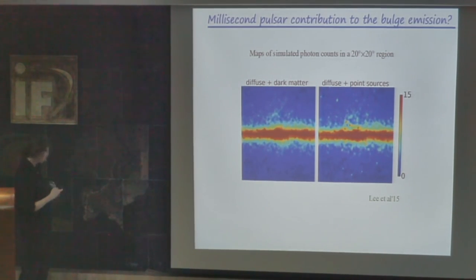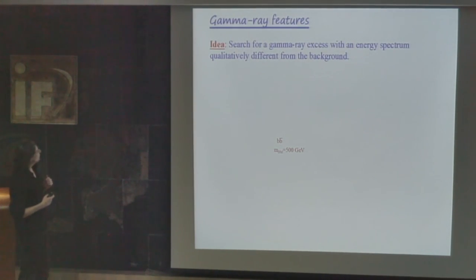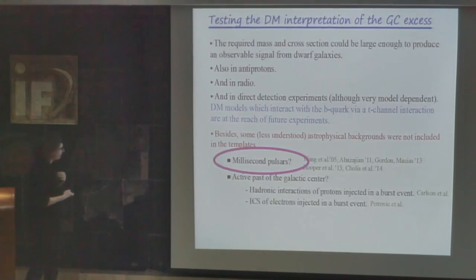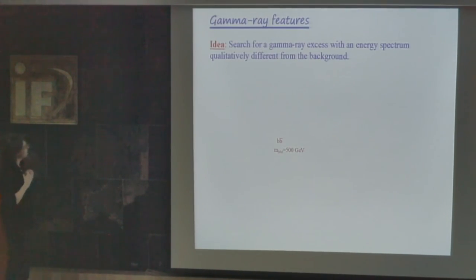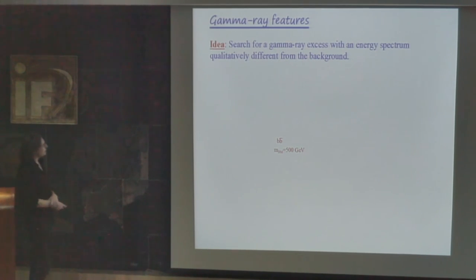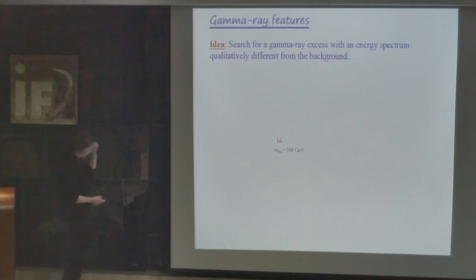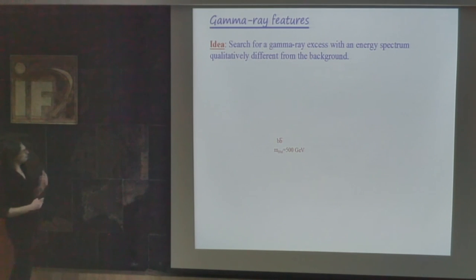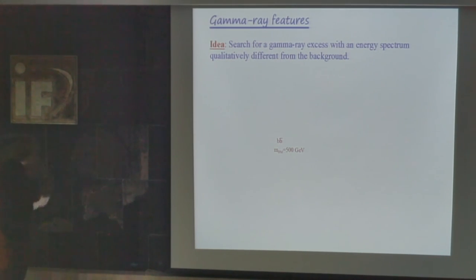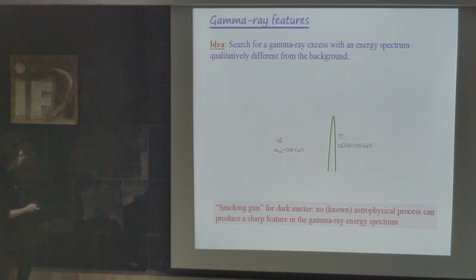In the last part of this presentation I would like to discuss gamma ray features. The idea is to search for a gamma ray excess with an energy spectrum different from the background, without relying on any background modeling. The only assumption is that the background from astrophysical processes is smooth, and we exploit the fact that dark matter particles could annihilate producing sharp spectral features.